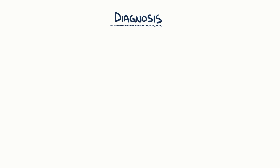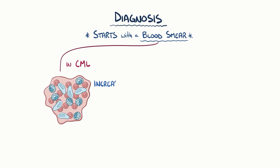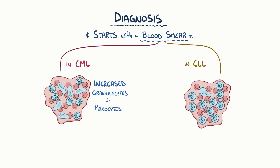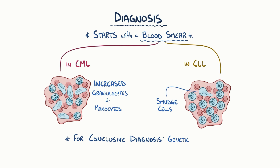The diagnosis of CML and CLL usually starts with a blood smear, which shows a lot of premature leukocytes. In CML, there are an increased number of granulocytes and monocytes, and in CLL there are often smudge cells on the blood smear, which are immature B cells that have broken during the smear. For a conclusive diagnosis, genetic testing can be done to look for the Philadelphia chromosome in CML and to look for chromosomal defects in CLL.